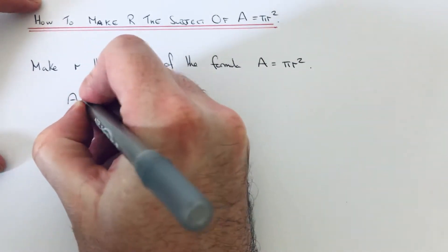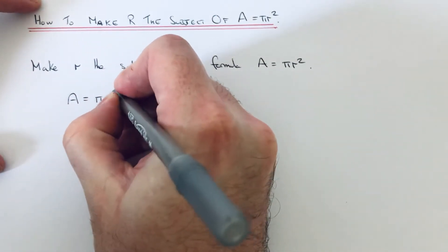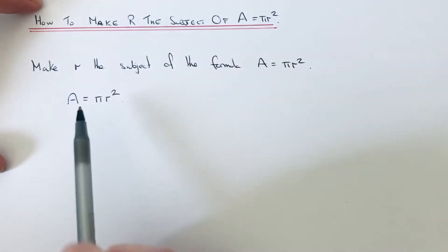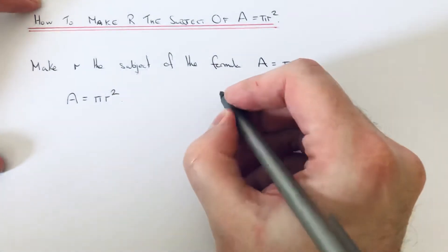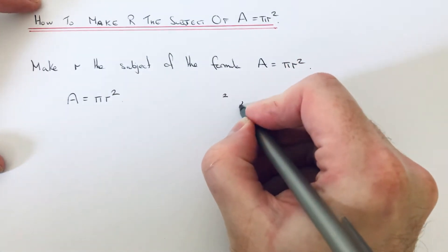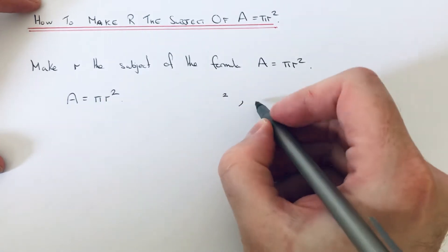First of all, let's write our formula down. Let's have a look then at what is happening to R on the right hand side of our formula. First of all, it's being squared, and then it's being multiplied by pi.